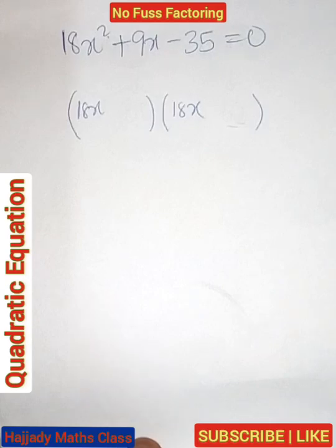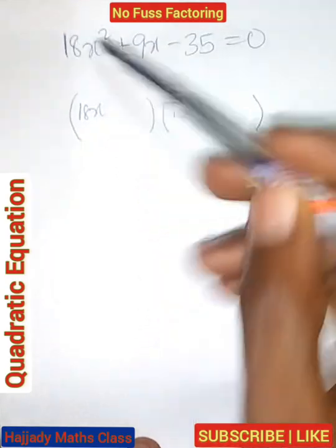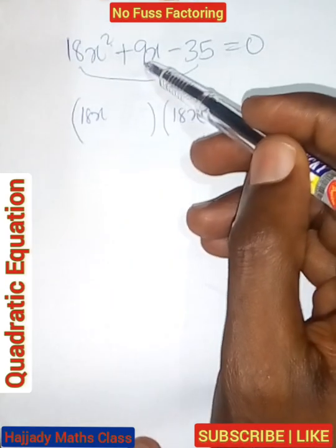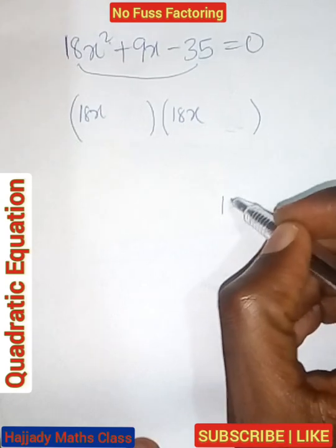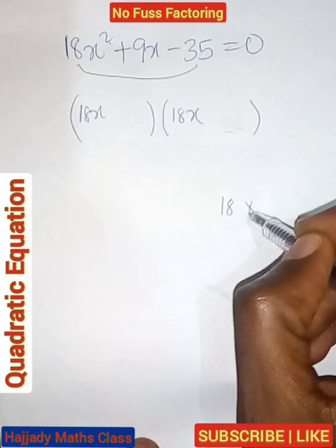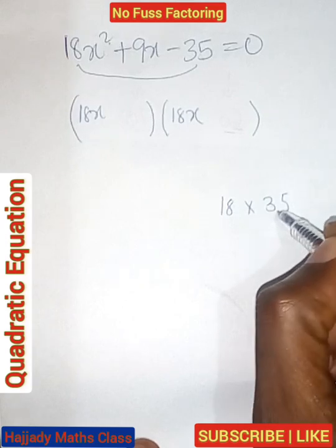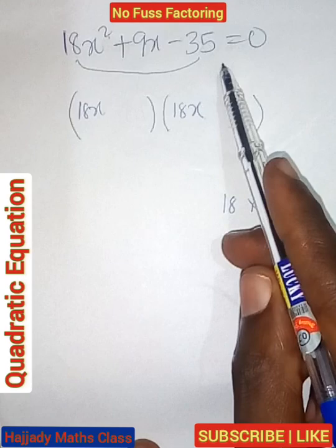And the next thing for us to do is, looking at this, we have 18x squared and 35. Just leave the 9x alone. Here we have that 18 multiplied by 35.